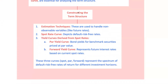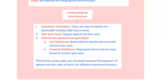Let's try to understand the term structure — spot rates, par rates, and forward rates. First things first, what is the term structure of interest rates? In simple terms, it's the relationship between the interest rate, or bond yield, and different maturities. It helps us understand how rates change over time and what the market expects for future interest rates. To do this, we use three main curves: spot rates, par rates, and forward rates.